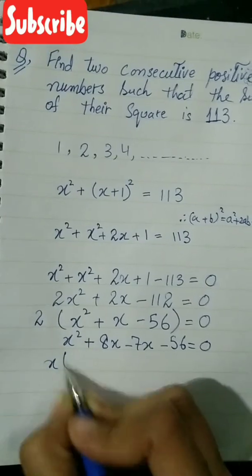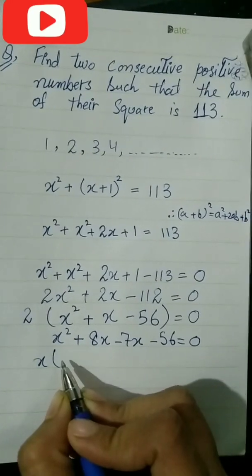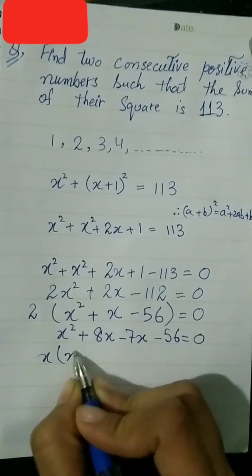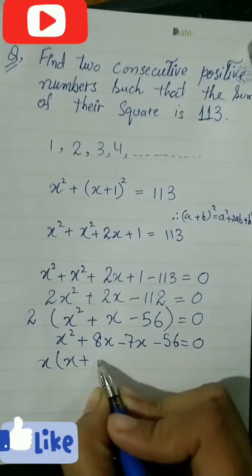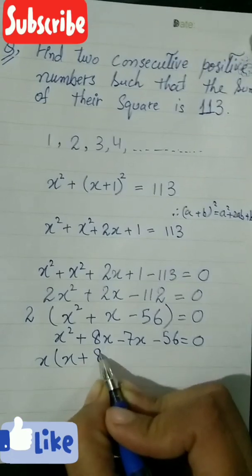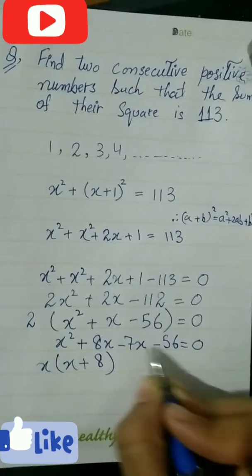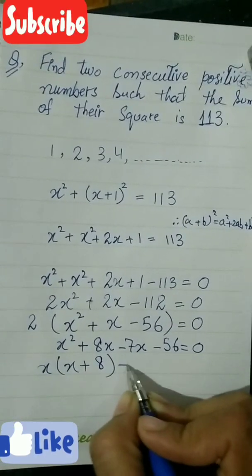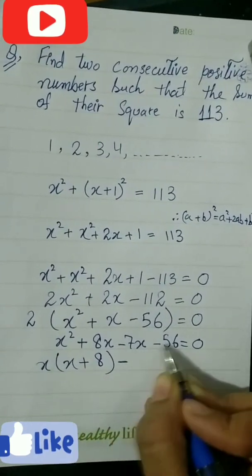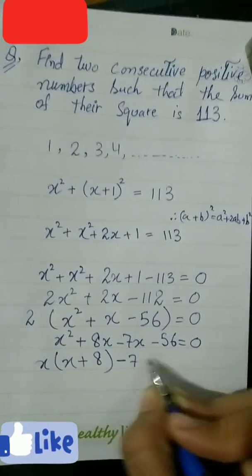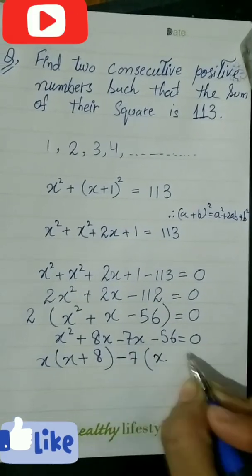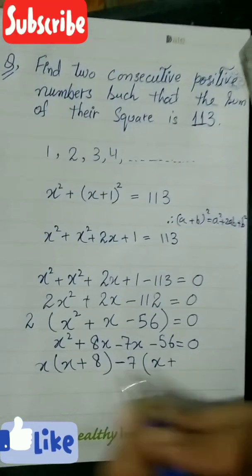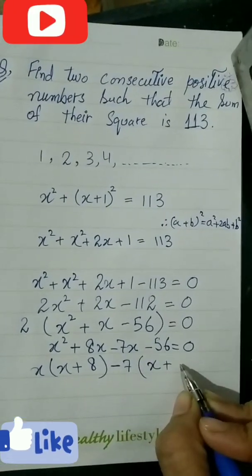Now we apply the mid-term break formula for factorization. We break the middle term — x is broken as 8x minus 7x. Both students know about the mid-term break method.